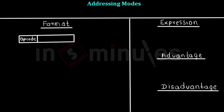Welcome back. We were looking at the different addressing modes of the processor, so let's look at the next addressing mode: indirect addressing mode. In indirect addressing mode, the memory address is provided; however, this address is indirect, so this is not the actual address of the operand.